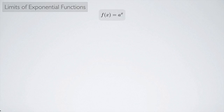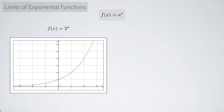Before we look at some limits of exponential functions, let's remind ourselves what the graphs of some exponential functions look like. So f of x equals a to the x is the type of function I'm talking about. For example, f of x equals 2 to the x — the graph passes through 1 on the y-axis and has a horizontal asymptote along the x-axis. This is the situation where the constant a is greater than 1.